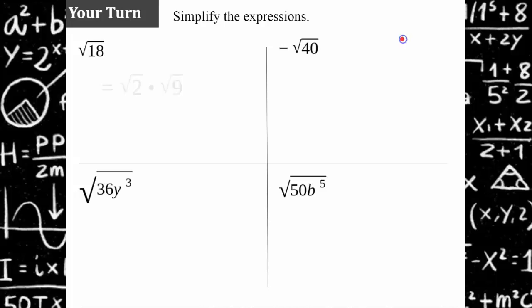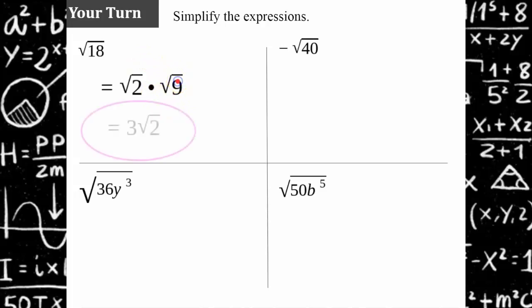Welcome back. The square root of 18 is equivalent to the square root of 2 times the square root of 9. Since the square root of 9 is a perfect square equal to 3, the simplified form is 3 times the square root of 2.